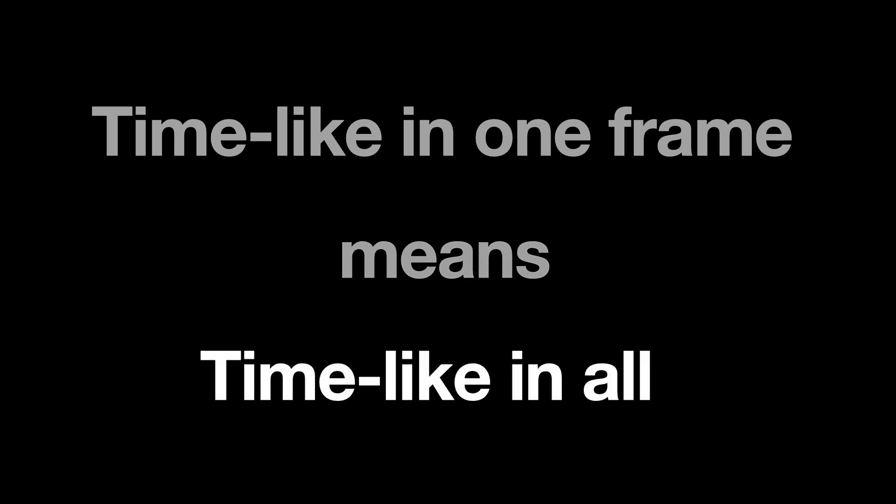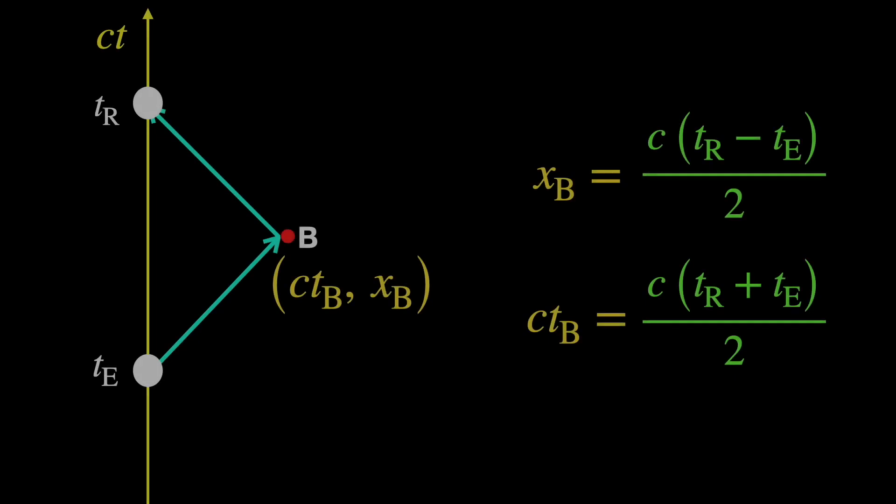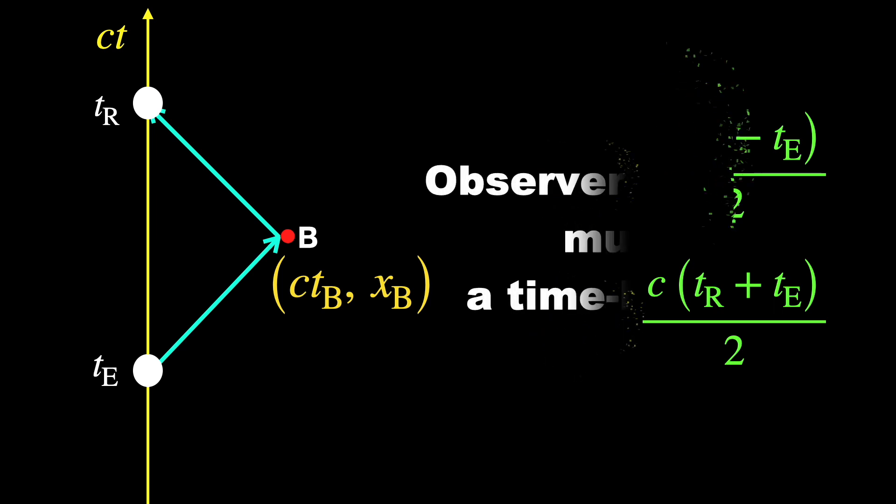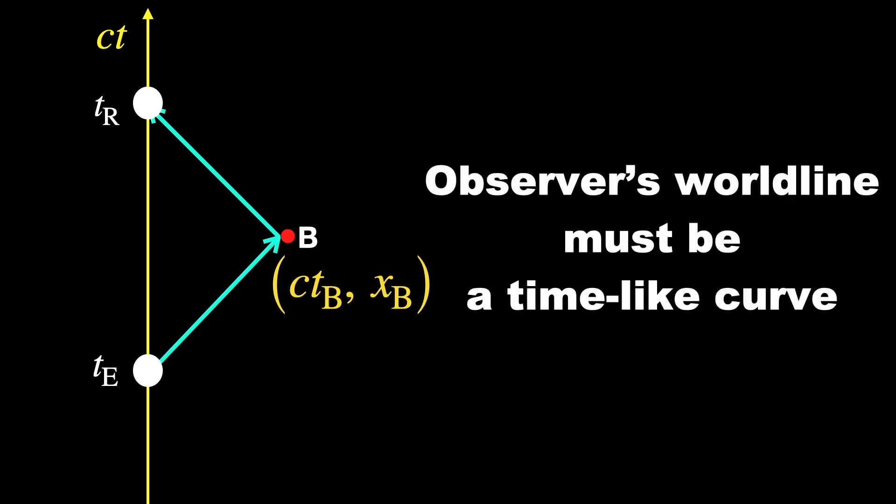Anyway, since space-time interval itself is an invariant by definition, the time-like nature of this one won't change for observers in other inertial frames. So they will also see it as a time-like interval. This means for a reference frame to be able to assign space and time coordinates to an event, its observers' world line must be a time-like curve.